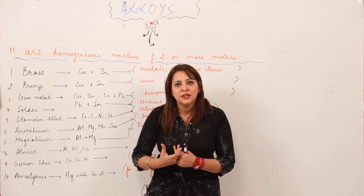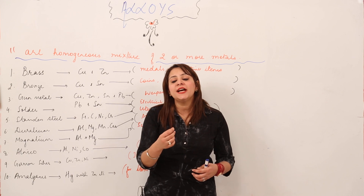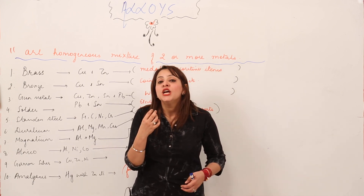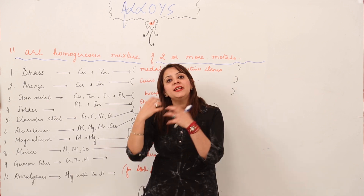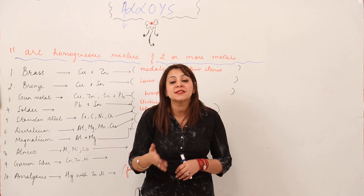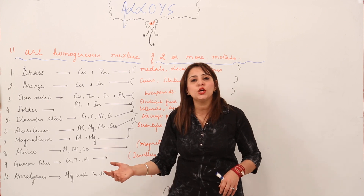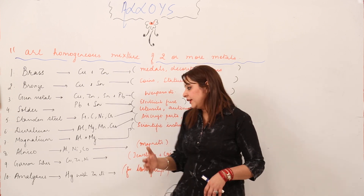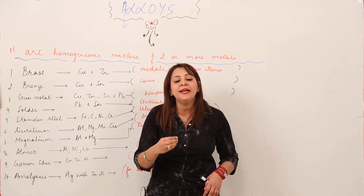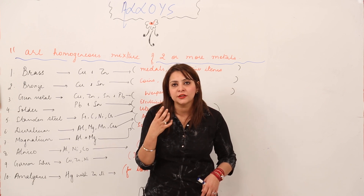The next alloy is amalgam. You may have seen it without knowing its name. When you eat sweets and get cavities in your teeth, the dentist fills the cavity with a white-colored substance — that is amalgam. Amalgam is an alloy of mercury, usually alloyed with zinc or sodium-like metals. It is used by dentists for tooth filling to prevent attack by microorganisms in the tooth.